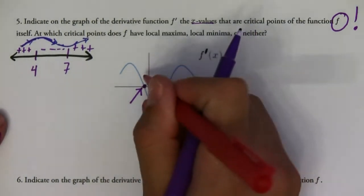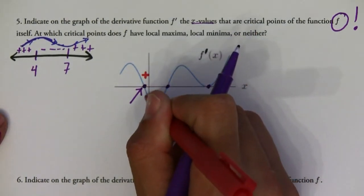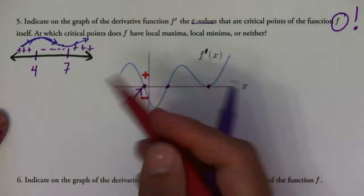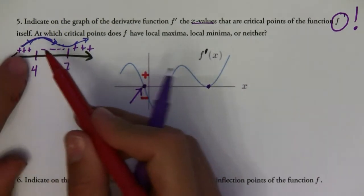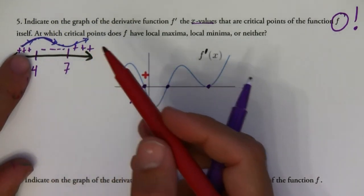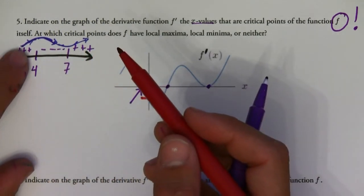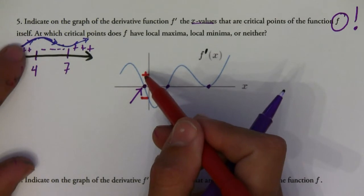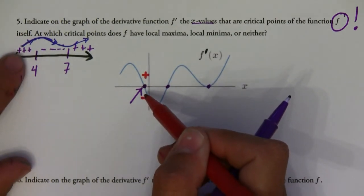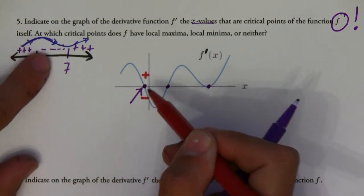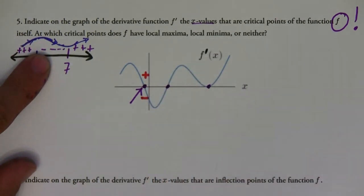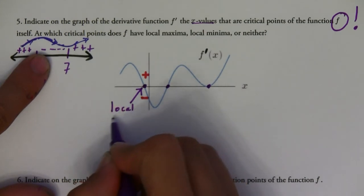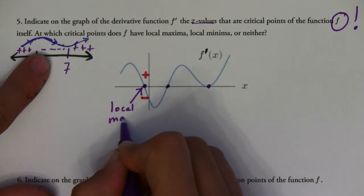At this x value, notice that the first derivative goes from positive to negative — similar to what we have on the number line at four. Since it goes from positive to negative, the function goes from increasing to decreasing, which means this is going to be a local maximum.